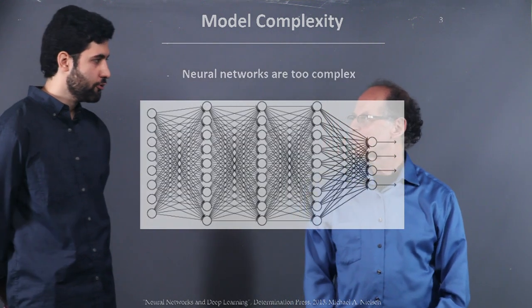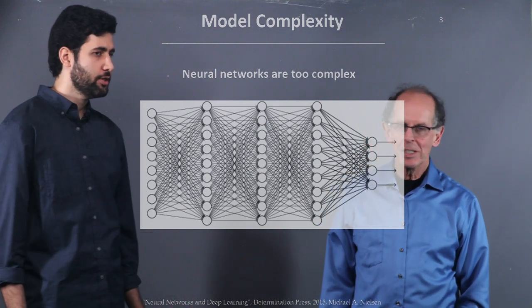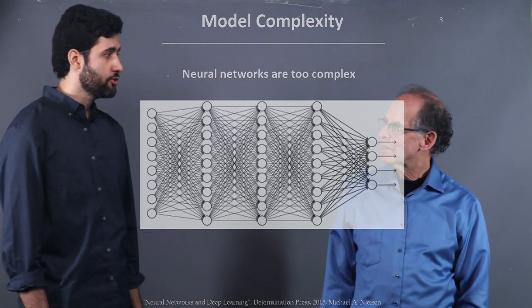In neural networks, you have too many connections, too many parameters. So, there's a high chance of overfit.